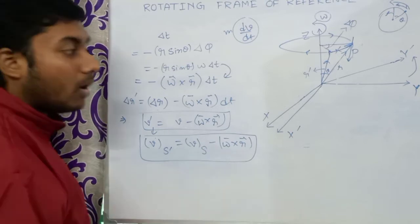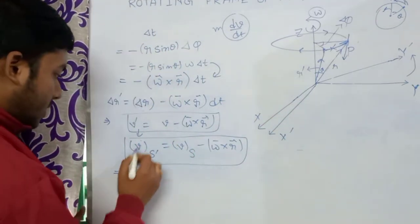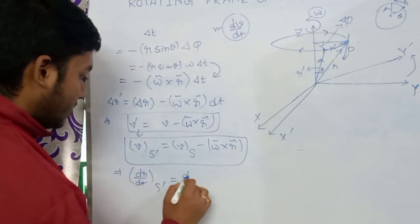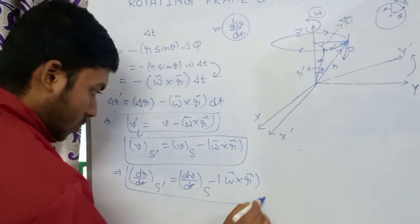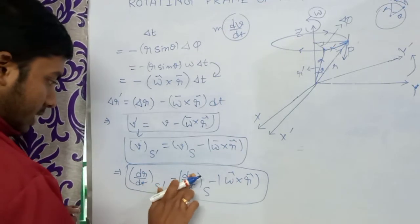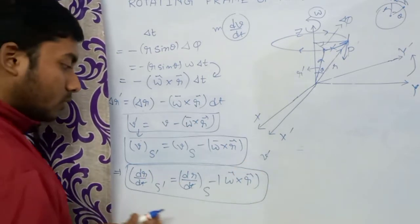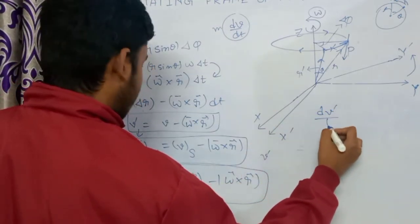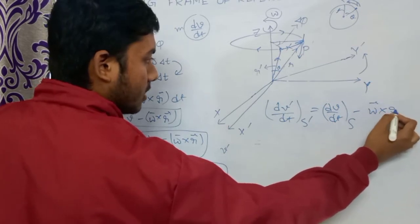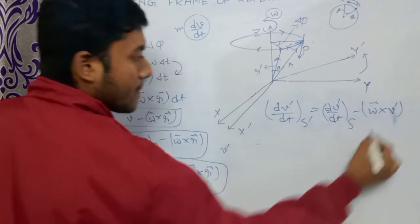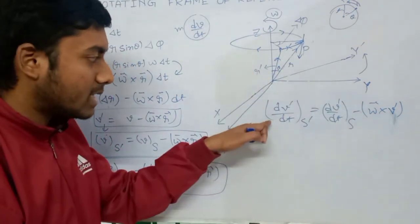Since this expression is valid for all vectors, I can apply it to the velocity. So: d-r/dt in S-prime equals dv/dt in S minus omega cross r. When we substitute v-dash in place of r, we get: dv-dash/dt measured from S-prime equals dv/dt measured from S minus omega cross v-prime.